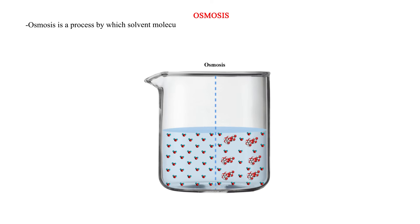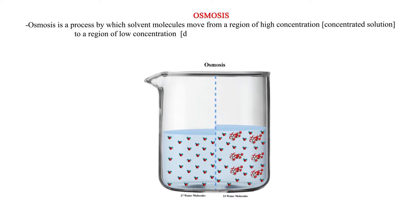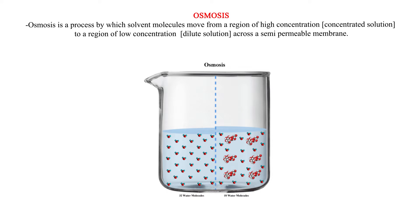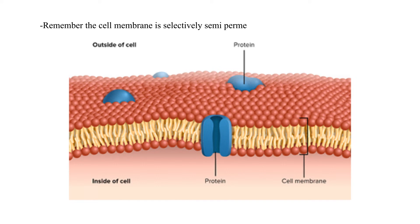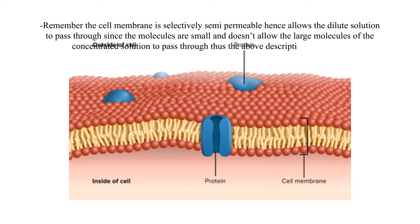Osmosis is a process by which solvent molecules move from a region of high concentration to a region of low concentration across a semi-permeable membrane. The cell membrane is selectively semi-permeable, hence allows the dilute solution to pass through since the molecules are small, and doesn't allow the large molecules of the concentrated solution to pass through.